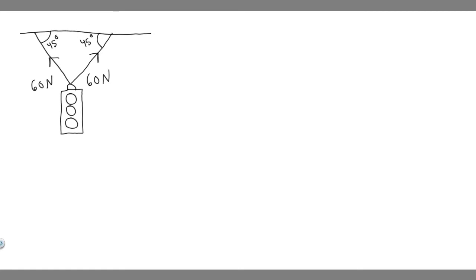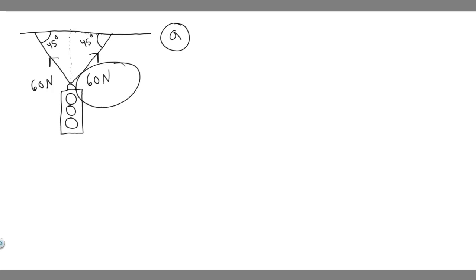So let's start with Part A. We're trying to find the resultant force exerted by the two cables supporting the traffic light. The way to think about this is in X and Y components. If we imagine this is the Y axis and this is the X axis, the only thing that's going to be supporting this traffic light are the Y components of these tension forces, because the X doesn't hold it up — we only have a force MG in the Y direction.